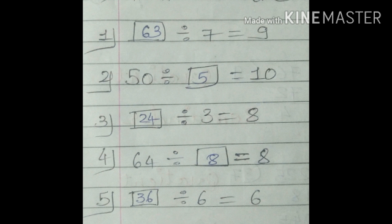Let's see number 1: dash divided by 7 is equal to 9. Which number, when divided by 7, gives 9? For that we multiply 7 by 9. 7 times 9 is 63. So the answer in the box is 63. This means if we divide 63 by 7, the answer is 9.